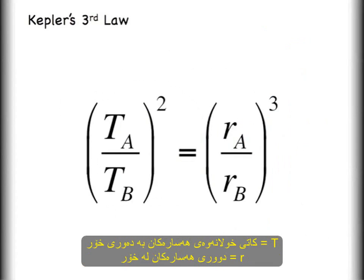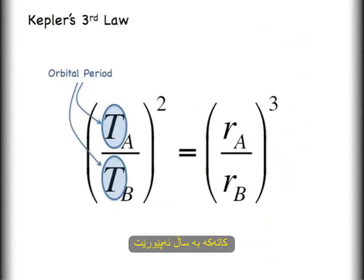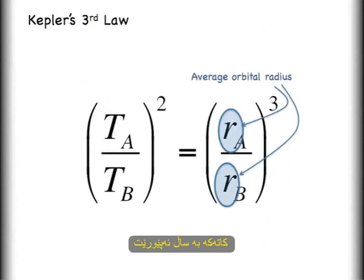Kepler's third law is an equation. The capital T stands for the orbital period — that has to have units of time, such as days, hours, or years, whatever is convenient. The r is a description of the average orbital radius.